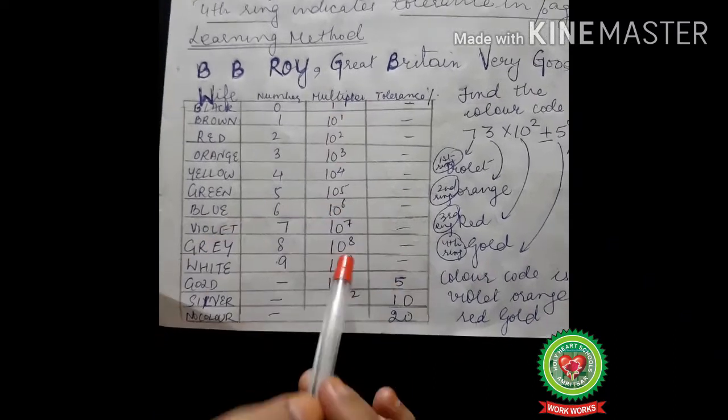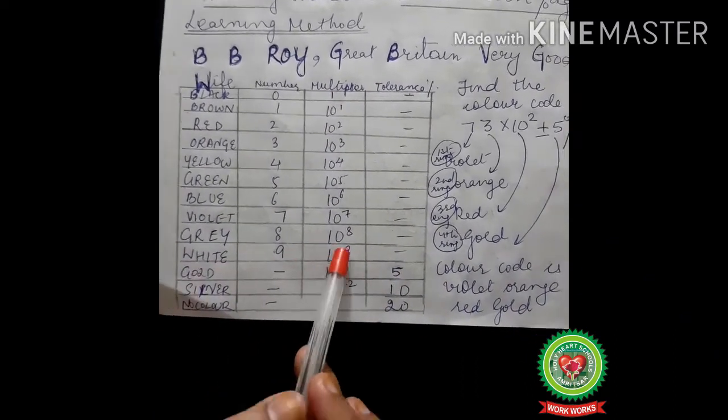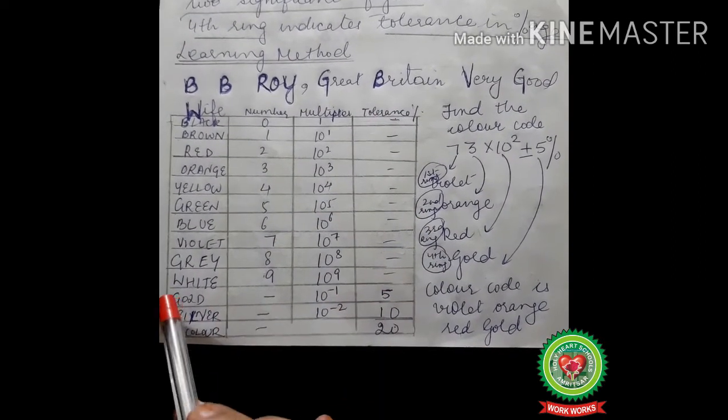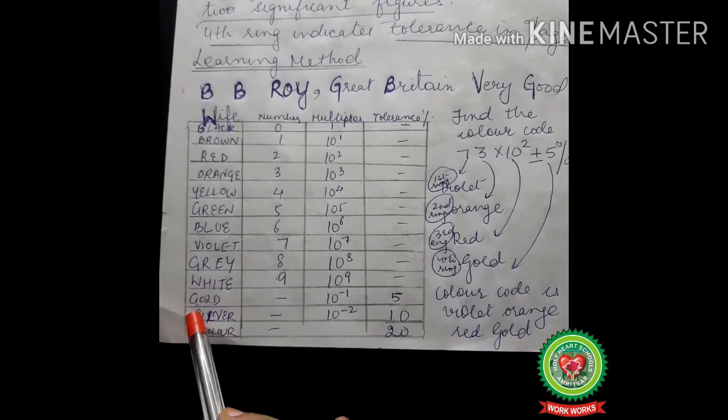We have to learn it as such. Numbers zero through nine, then here 10 to the power zero, 10 to the power one through 10 to the power nine. Then here gold and silver is having 10 power minus one and 10 power minus two. Then tolerance power, we just have for these colors: gold, silver, and no color, five percent, ten percent, and twenty percent.